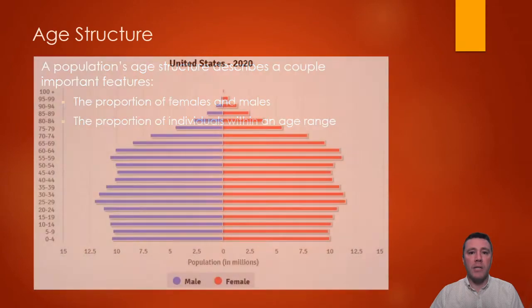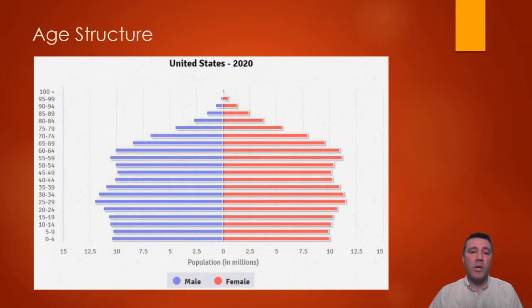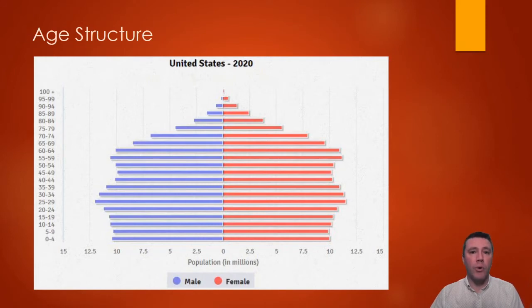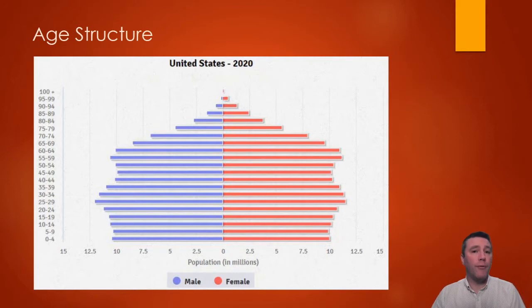In an age structure diagram like this, the y-axis represents individuals that fall within age range categories — 0 to 4 years old, 5 to 9 years old, 10 to 14 years old, etc. On the x-axis we would find either the percentage of those individuals in the population or, as in this diagram, the absolute number of individuals within each group. For example, in the US in 2020, this age structure tells us that there are approximately 10 million males between the ages of 60 and 64 years old, and 2.5 million females aged 85 to 89 years old.